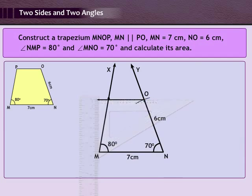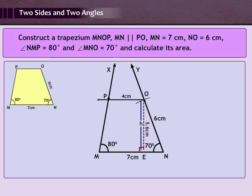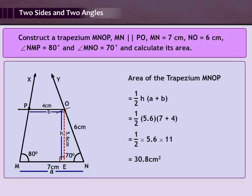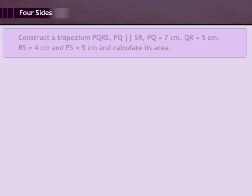Step 5: With N as centre and radius 6 cm, draw an arc cutting NY at O. Step 6: Draw OZ parallel to MN; this cuts MX at P. Thus MNOP is the required trapezium. Step 7: From O draw OE perpendicular to MN; OE equals H equals 5.6 cm, OP equals B equals 4 cm, and MN equals A equals 7 cm. Therefore area of trapezium MNOP equals half H into A plus B equals 30.8 cm square.